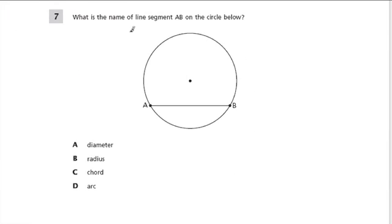What is the name of line segment AB on the circle below? So here's A, and here's B, and here's the line between them, and that is a chord. Why? Well, it doesn't go through the center, it's not a diameter. It doesn't touch the center and then go to the circle, that's a radius. And an arc is any line along the circle, so this is a chord.